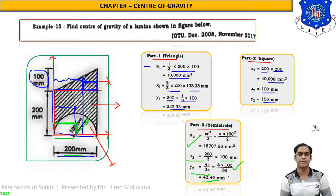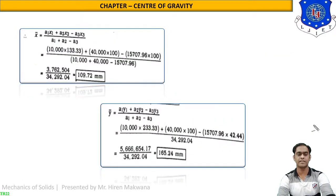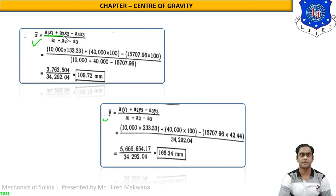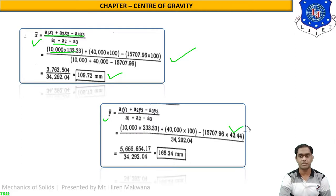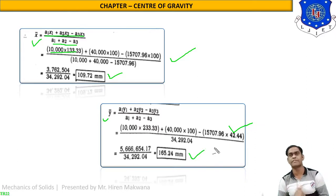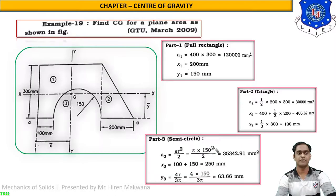Finally, we find x̄ and ȳ using the formulas: x̄ = (A1·x1 + A2·x2 − A3·x3) / (A1 + A2 − A3) = 109.72 mm. Similarly, ȳ = (A1·y1 + A2·y2 − A3·y3) / (A1 + A2 − A3) = 165.24 mm. This completes numerical number one.